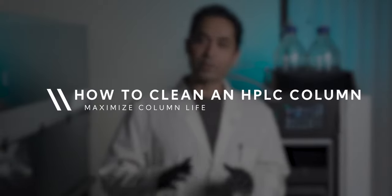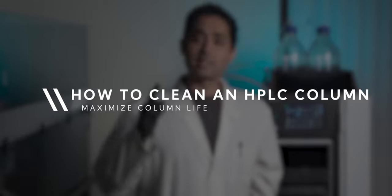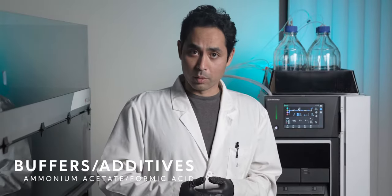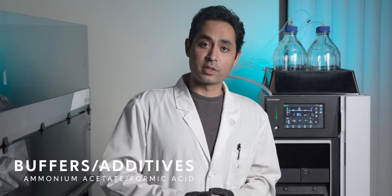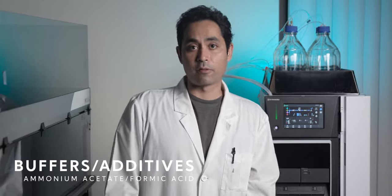In this video we're going to talk about how to flush an HPLC column in order to maximize column life. This is especially important to do if you add buffers or additives to your mobile phase, for instance, most people use something like ammonium acetate or formic acid.